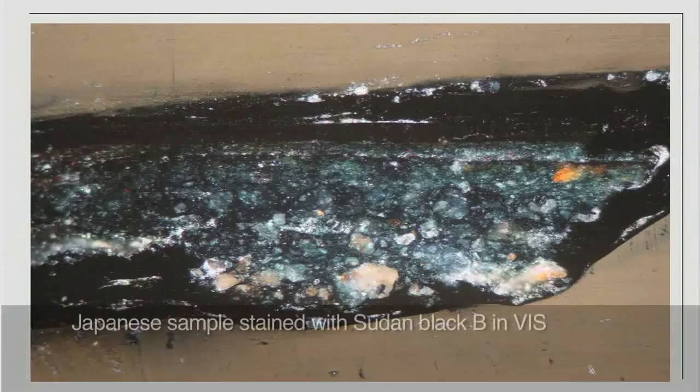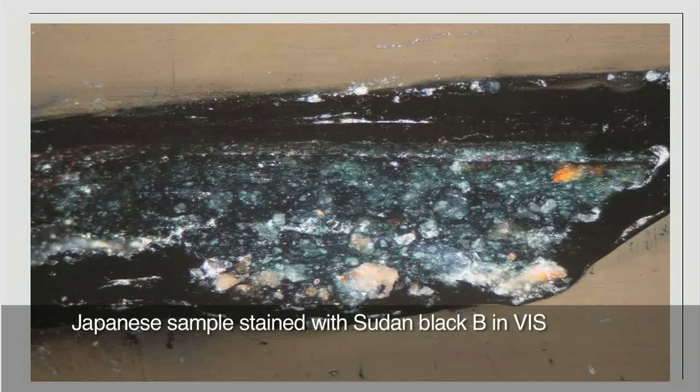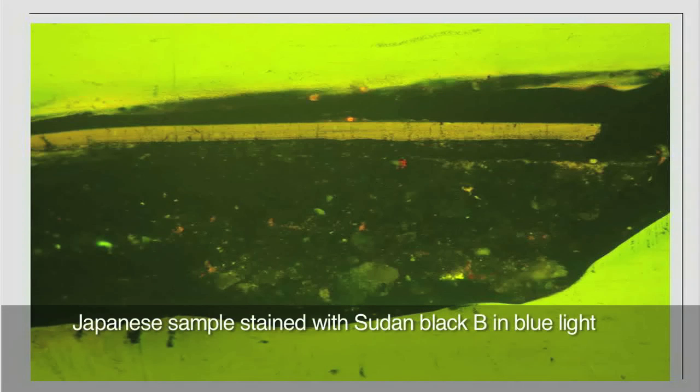After staining for oils, the Japanese lacquer sample showed a very regular staining in the foundation layers, which both have taken up a deep blue-black colour. If viewed under blue light, the sample further shows that the very top layer, which was previously fluorescing in bright yellow, now is stained entirely black. This suggests that the top layer is an oil varnish rather than an Asian lacquer, which would not have taken up any staining agent.